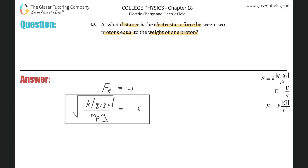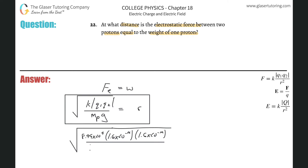Now it's just plug and chug. We have K = 8.99 × 10⁹, multiplied by Q1 times Q2. The charge of a proton is 1.6 × 10⁻¹⁹, and we use that twice since there are two protons. Then divide by the mass of a proton, 1.67 × 10⁻²⁷, multiplied by 9.8. That whole expression equals R, and we take the square root.